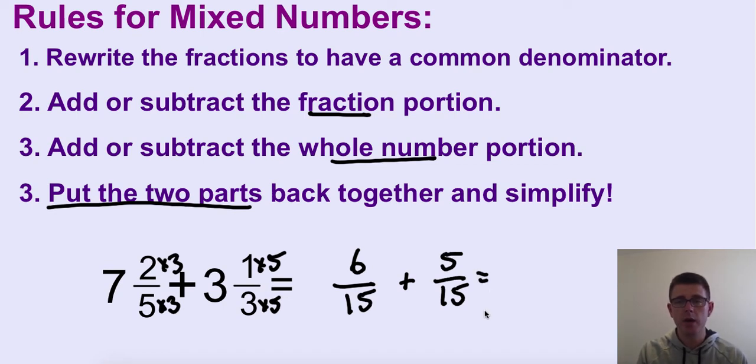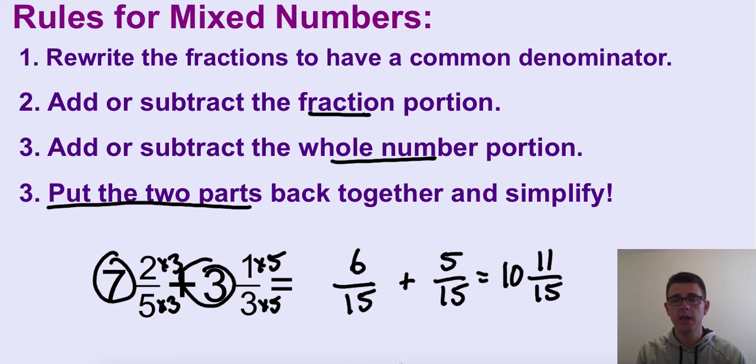Once I have those common denominators, I can go ahead and add them together. That gives me 11/15. I can't simplify, so I'm okay there. But don't forget to go back and do step 3. Add the whole number. 7 plus 3 is 10. 10 and 11/15. So it's really just a fraction problem with a little basic addition problem to go with it.